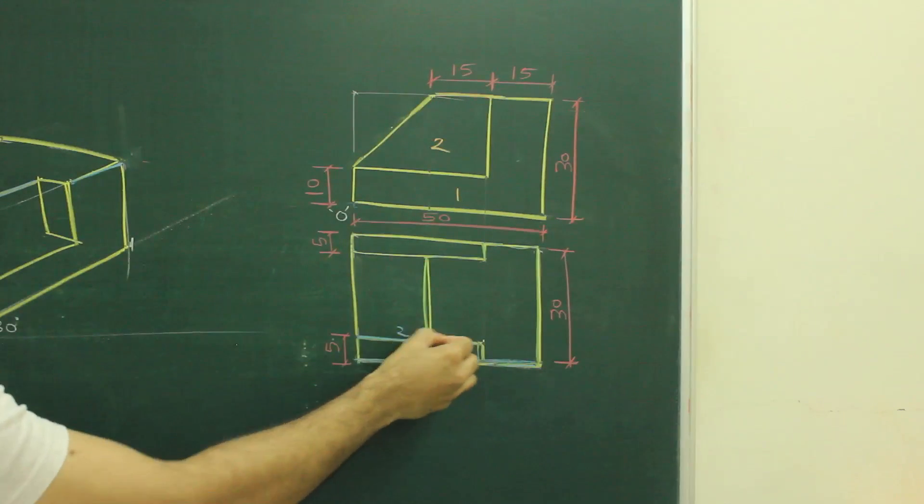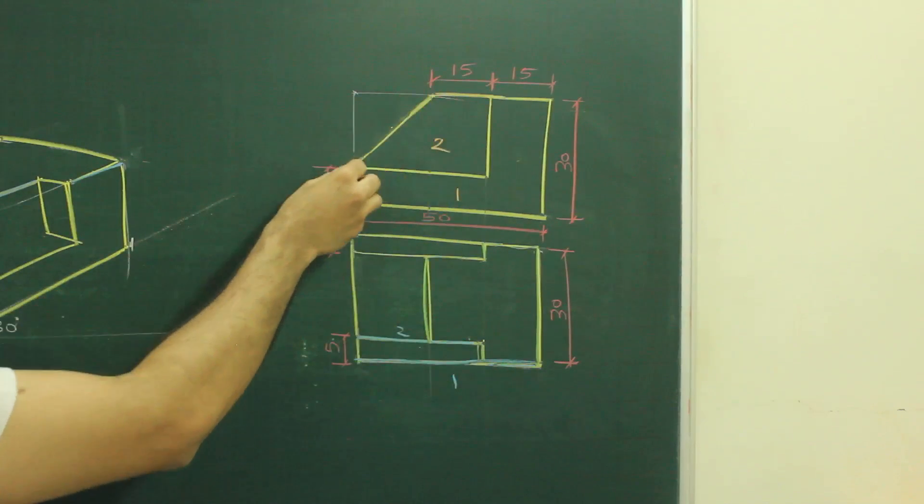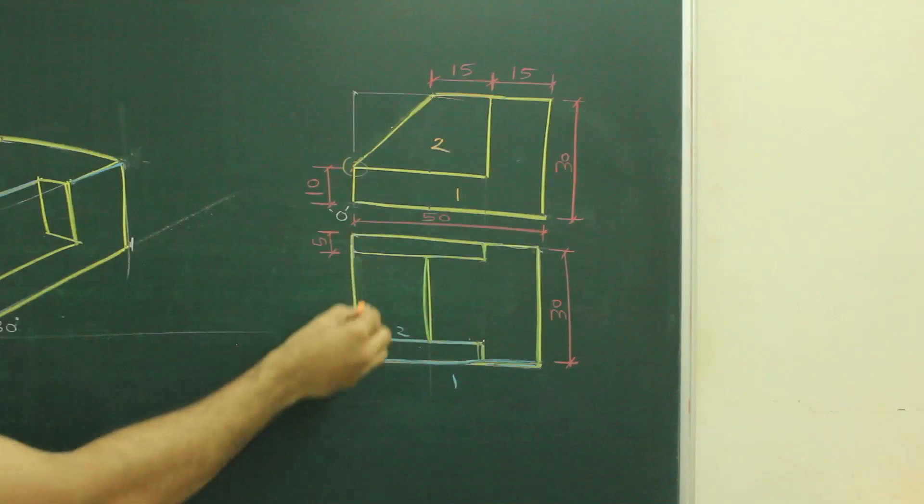In top view, it is here. Now if you see, they have given this slope, which is at the bottom. But this part is where? Here.